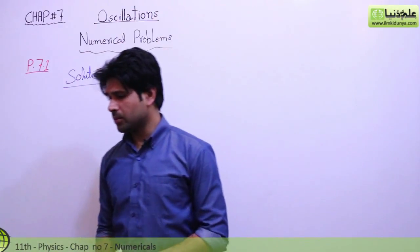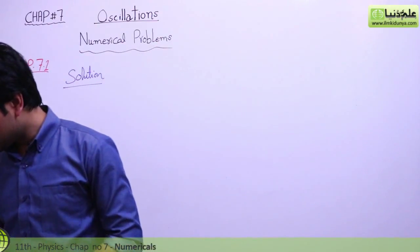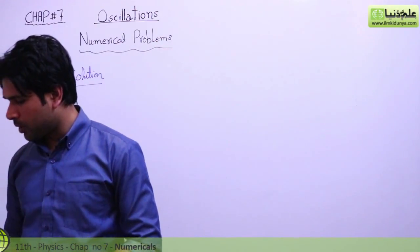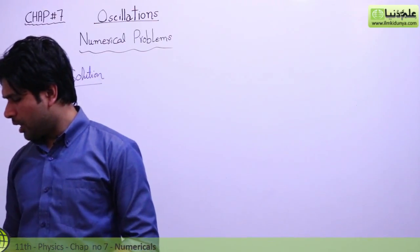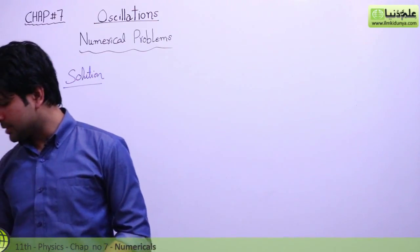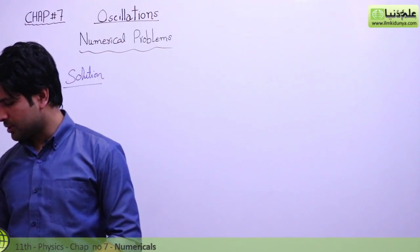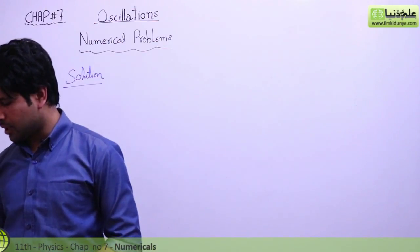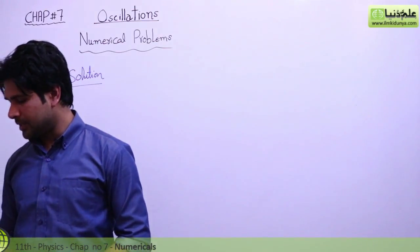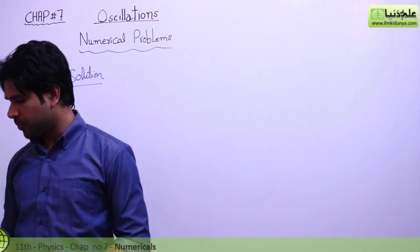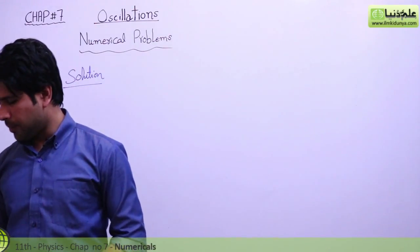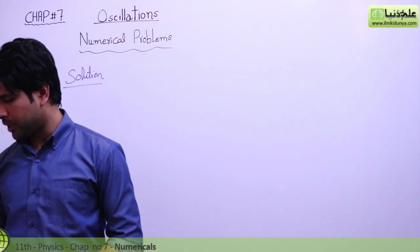The first numerical problem of your textbook is: a 100 gram body hung on a spring elongates the spring by 4.0 centimeter. When a certain object is hung on the spring and vibrating, its period is 0.568 seconds. What is the mass of the object pulling the spring?